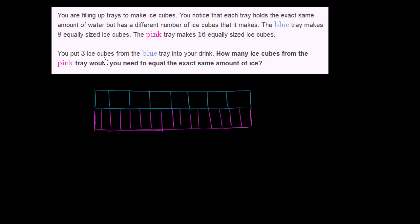Set up the problem. Now you put three ice cubes from the blue tray into your drink. So let's do that. So one, two, three ice cubes from the blue tray into your drink. How many ice cubes from the pink tray would you need to equal the same exact amount of ice?